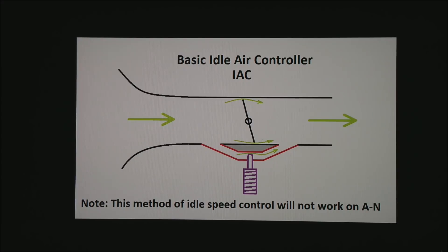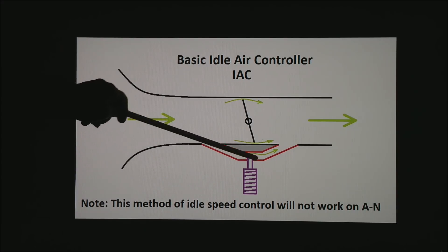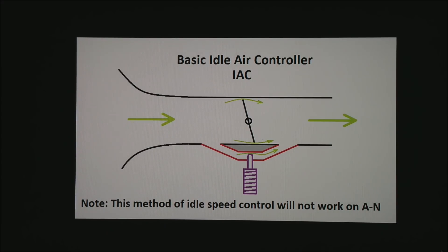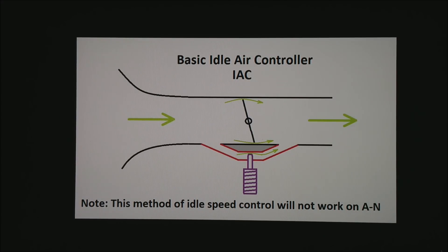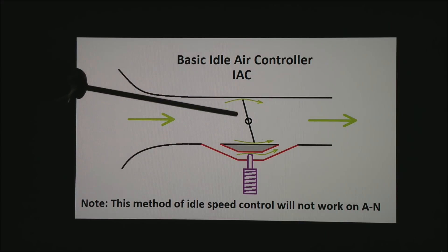I want to note that this method of idle speed control using an IAC will not work on an Alpha-N system, where all fueling is based and air flow is calculated from the angle of the throttle. It will know nothing about the idle air controller bleeding air past it and it just will not work.